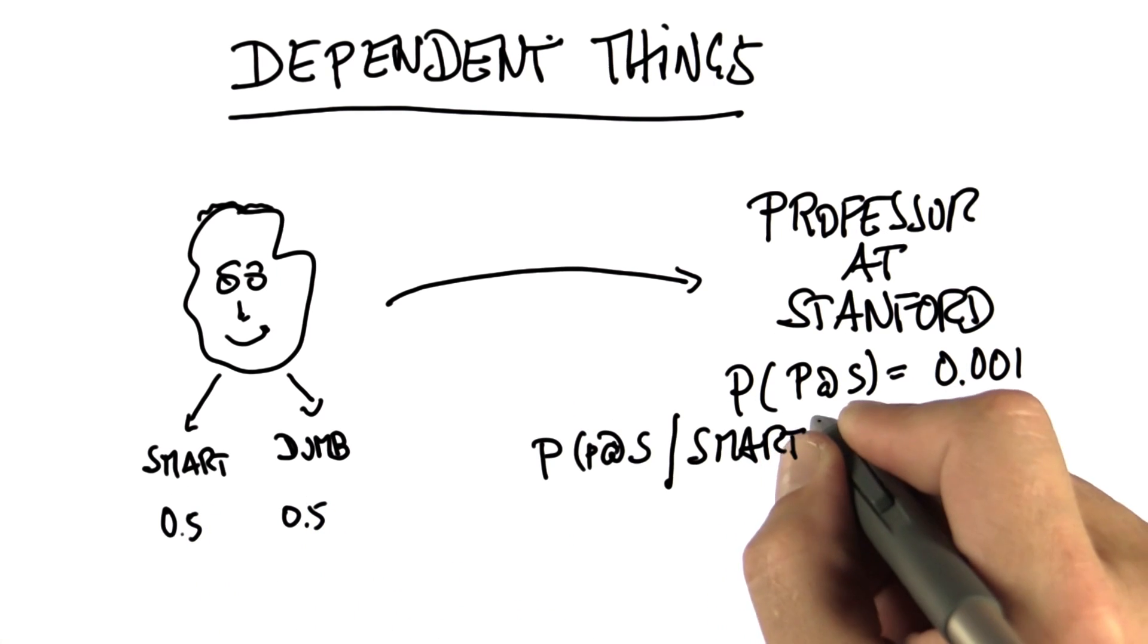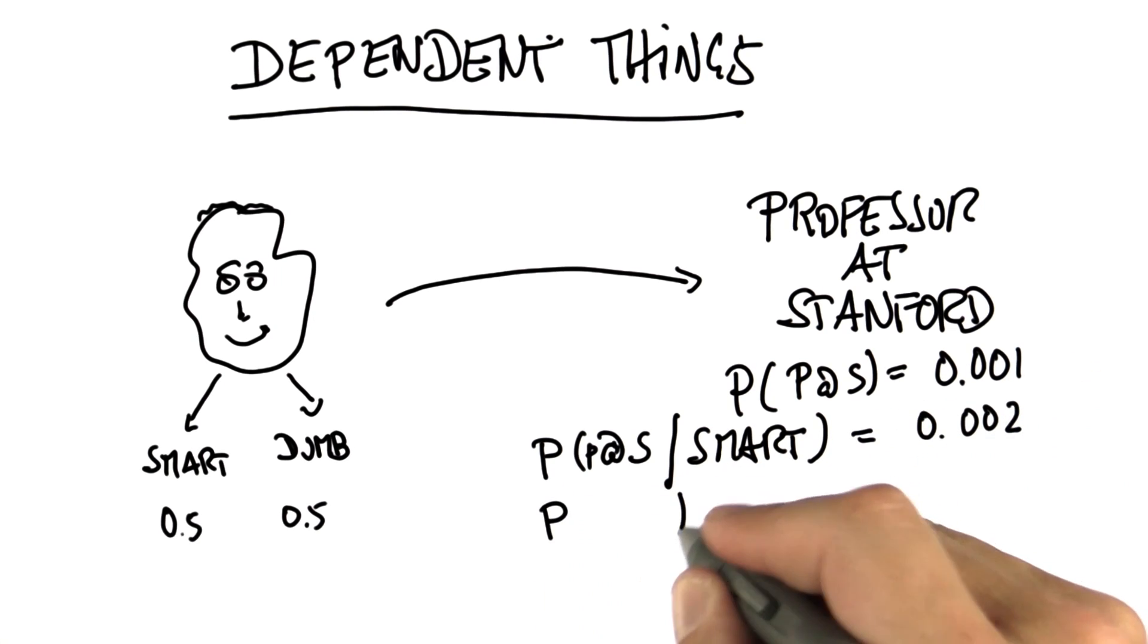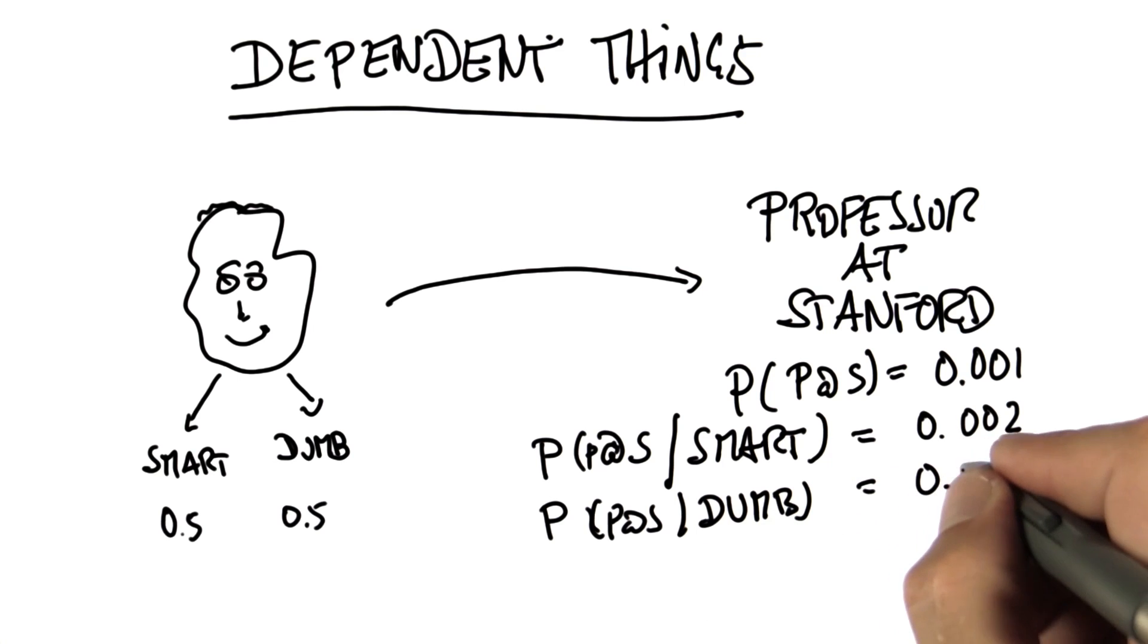If you are born smart, the probability might be larger. Whereas if you're born dumb, the probability might be much, much smaller.